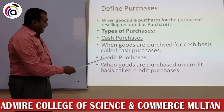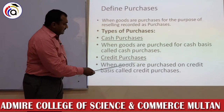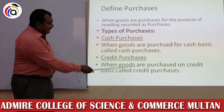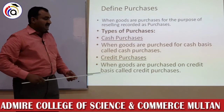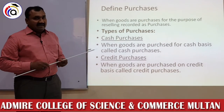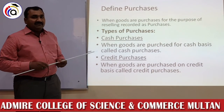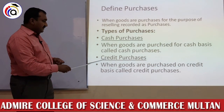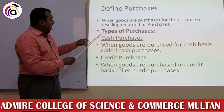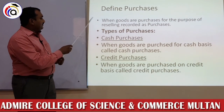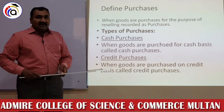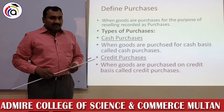Next is Credit Purchases. When goods are purchased on credit, this is called Credit Purchases. Aapne maal khareeda aur aapne uske paise nahi diye — aapne paise in future dene hain, to wo aapki Credit Purchase hogi. Students, ye thi do types Purchases ki: ek Cash, ek Credit. Umeed hai aapko samajh aaya hoga. Thank you.